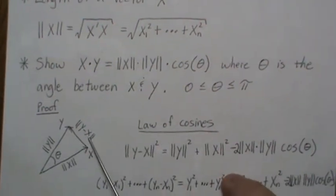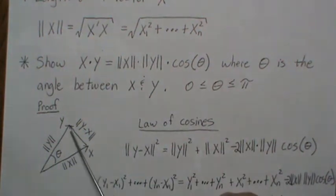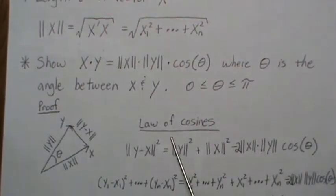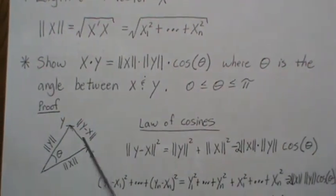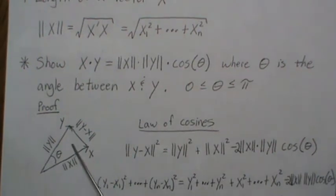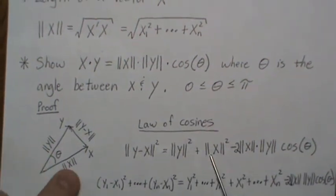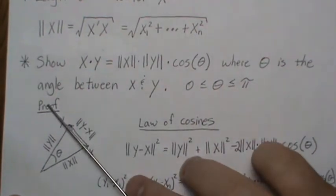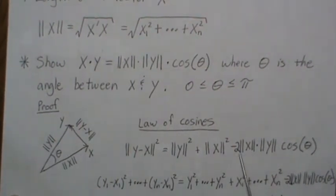If we do vector addition — take vector X and add Y minus X — we get Y. That's one way to remember it. The law of cosines gives us this relationship: the cosine of theta corresponds to the side opposite it, which is the squared length of that vector plus the squared length of Y, minus two times this length. If this angle were 90 degrees, cosine is zero and this term drops away — we're back in the Pythagorean theorem setting.